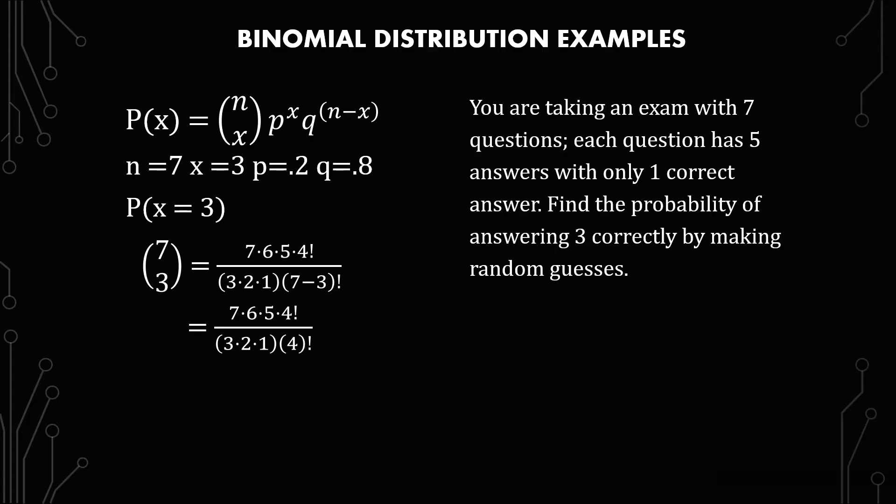Let's go with the binomial coefficient first at the very beginning of the formula. Seven choose three. So this is what it looks like. Seven times six times five times four times three times two times one is at the top. I just decided to keep the factorial there for four because I wanted to show you a simplistic way of dealing with this. And then on the bottom, we have three times two times one times seven minus three factorial.